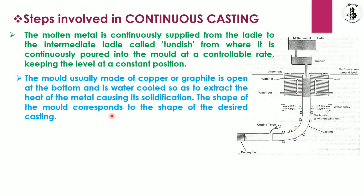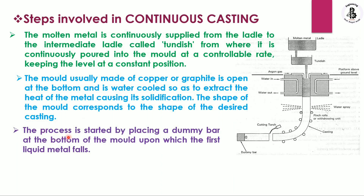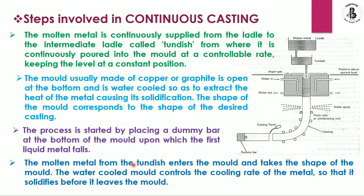The shape of the mold corresponds to the shape of the desired castings, depending on requirements. The process is started by placing a dummy bar at the bottom of the mold upon which the first liquid metal falls. The molten metal from the tundish enters the mold and takes the shape of the mold. The water-cooled mold controls the cooling rate so that the metal solidifies before it leaves the mold.